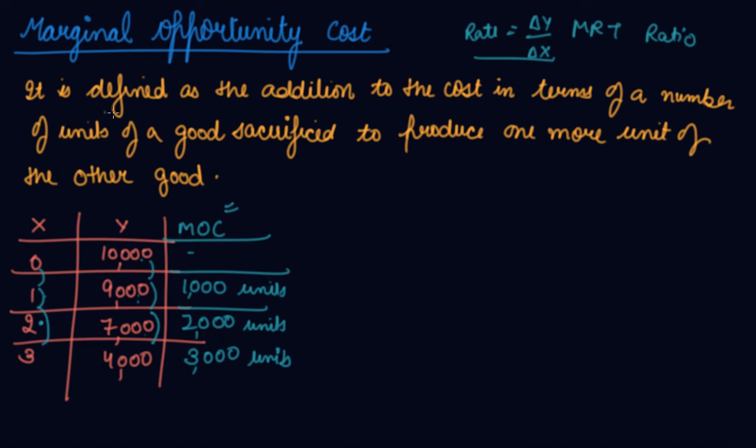So your marginal opportunity cost is the loss of good Y for every additional unit of good X produced.